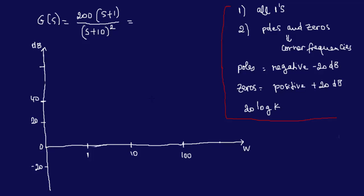Second example on Bode plot. So all the same rules still apply. Here we have, if you notice, we have a second order pole here at the bottom. So we're going to take that into consideration.